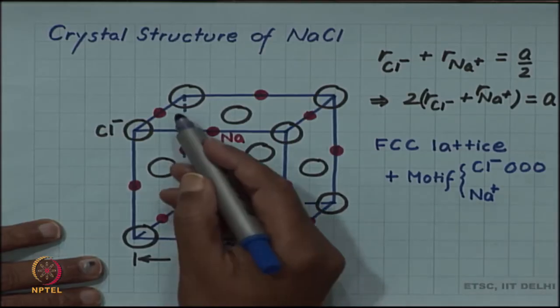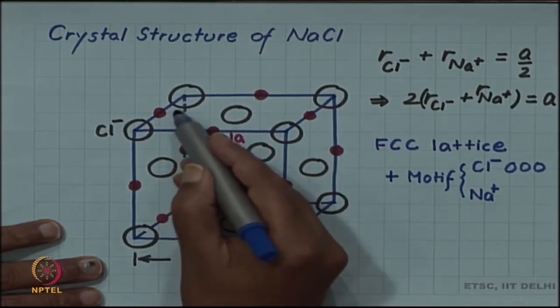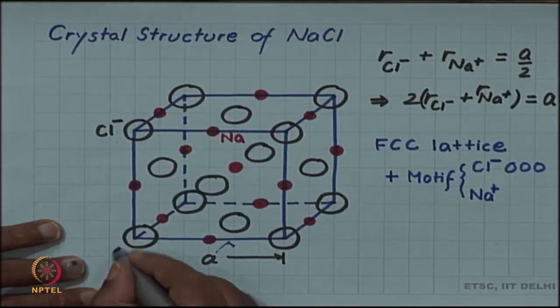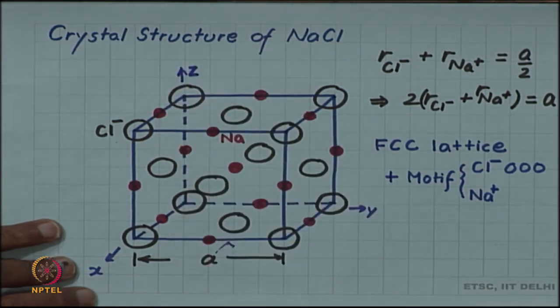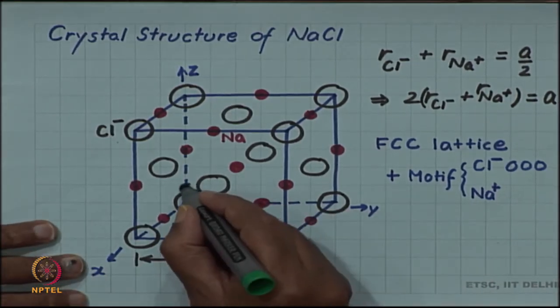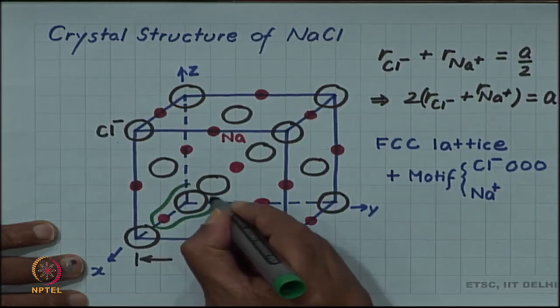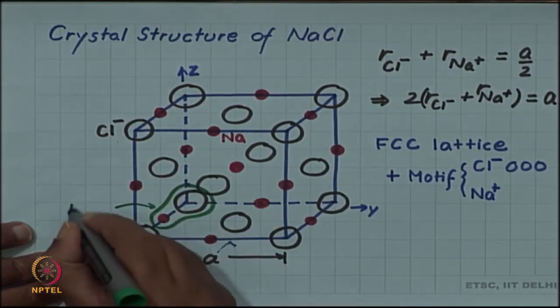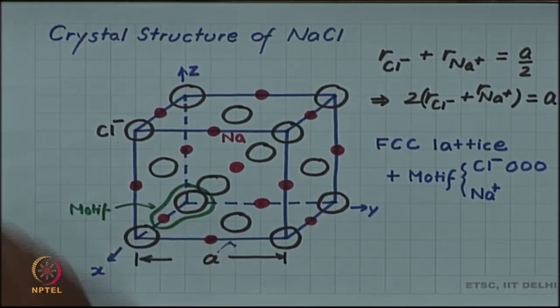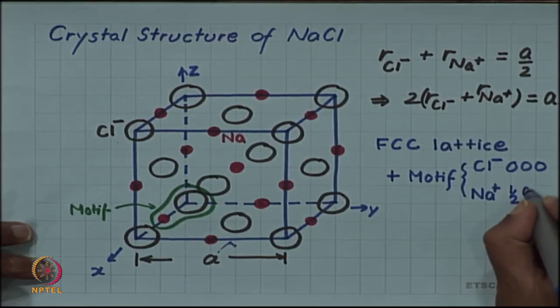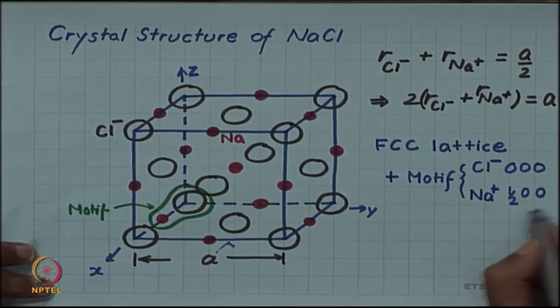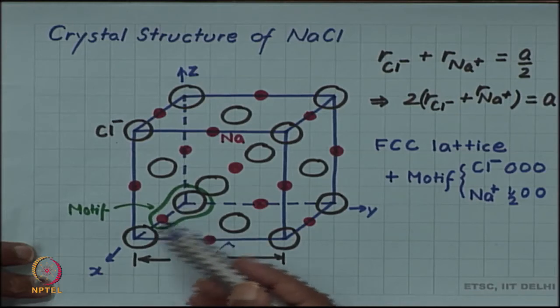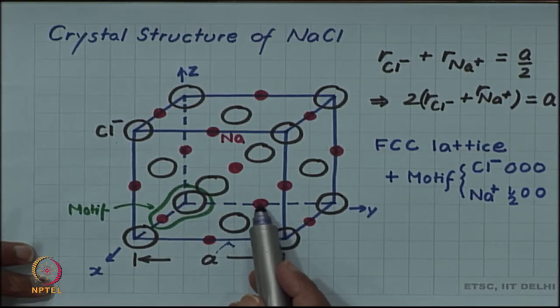You can select a nearest sodium ion, which will be along the x, y, or z axis. You can select your motif by selecting a nearest sodium ion along the x-axis. This can be a possible motif. The sodium ion you can then write as (1/2, 0, 0). But sometimes it appears that the x-axis neighbor is being given preference over other neighbors; there is a neighbor on the y-axis also at the same distance, and the z-axis also at the same distance.